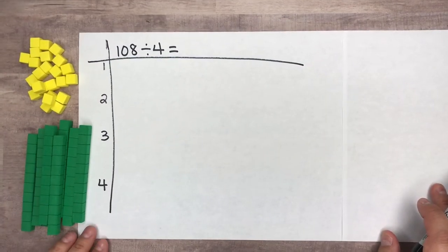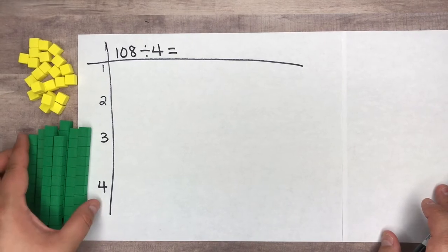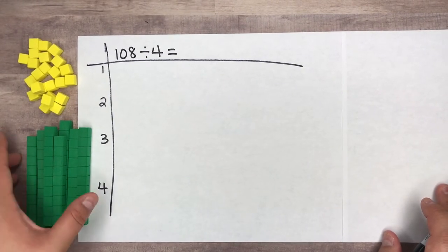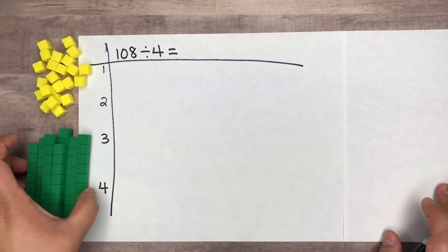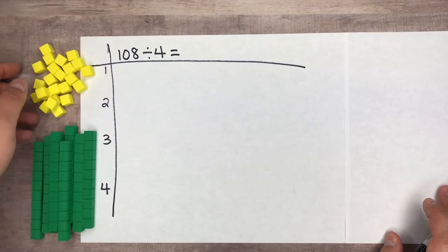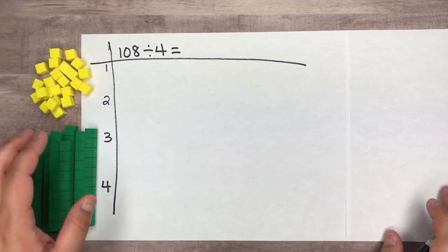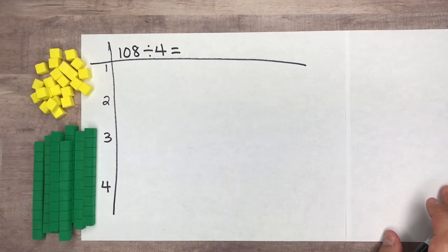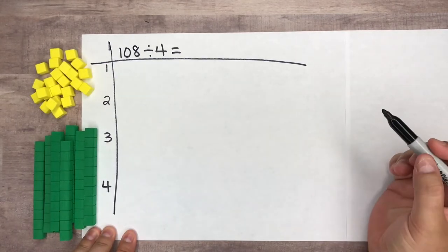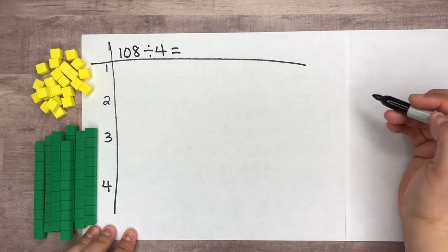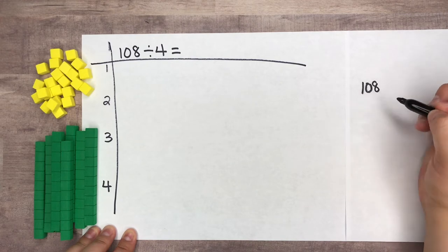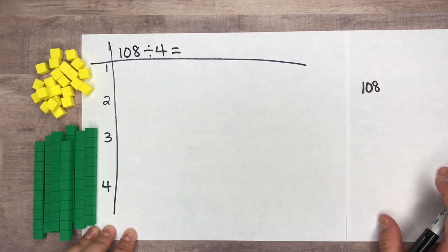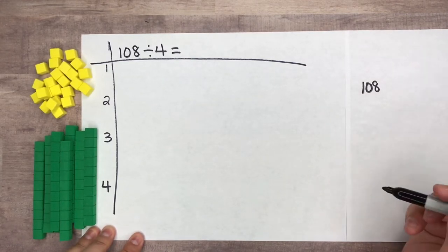Here's my next example — I'm choosing a larger number: 108 divided by 4. I have my tens and ones already prepared. I have 8 tens here and 28 ones, pulled out before I started so I'd have exactly what I needed. Let's divide. I'm going to be subtracting over and over again until I get to 0 or a remainder. I'll use my tens first and divide them into groups of 4.